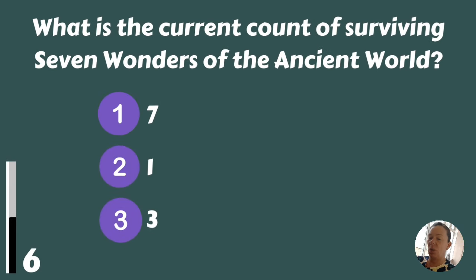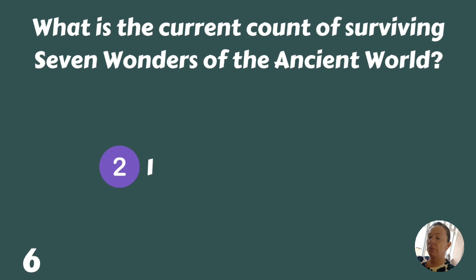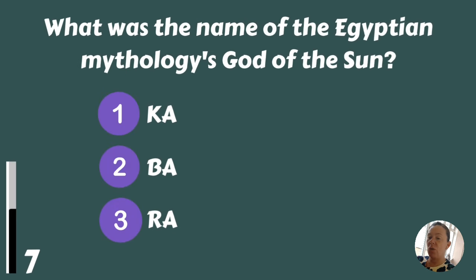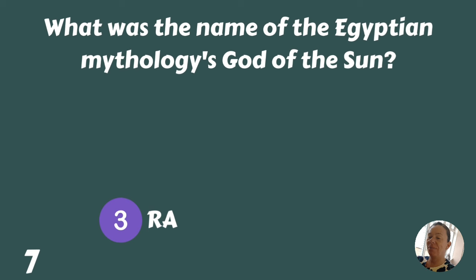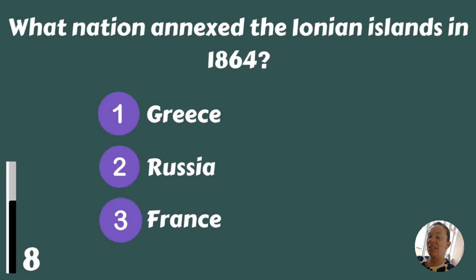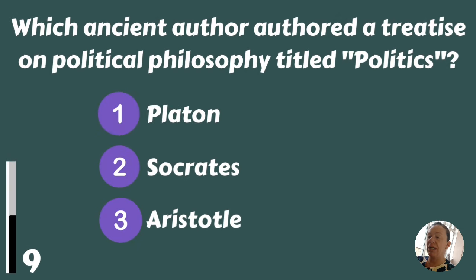What is the current count of surviving seven wonders of the ancient world — seven, one, or three? It's one. What was the name of the Egyptian mythology God of the Sun — Ra, Bar, or Ra? Ra. Which nation annexed the Ionian Islands in 1864 — Greece, Russia, or France? Greece.